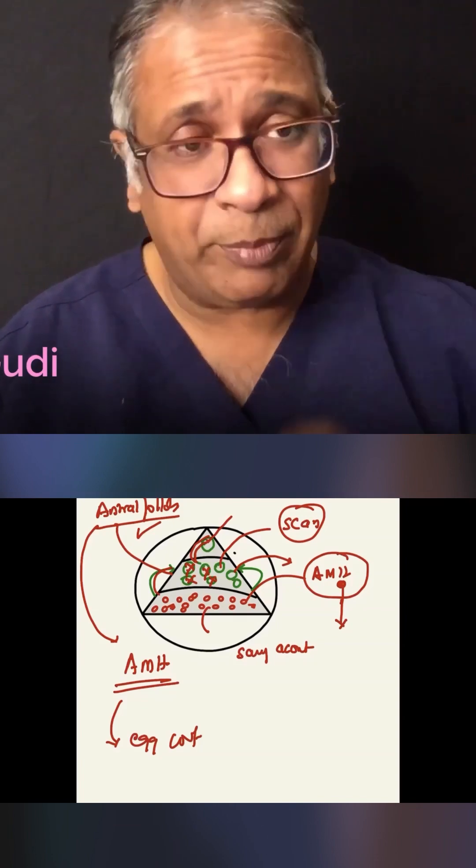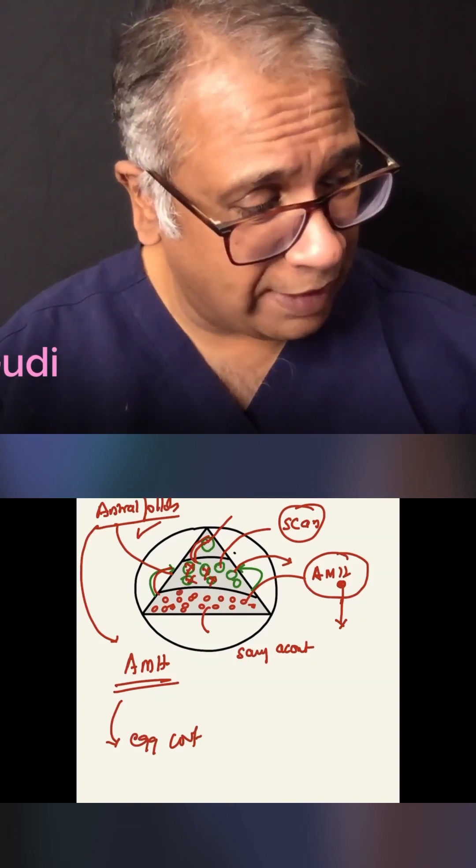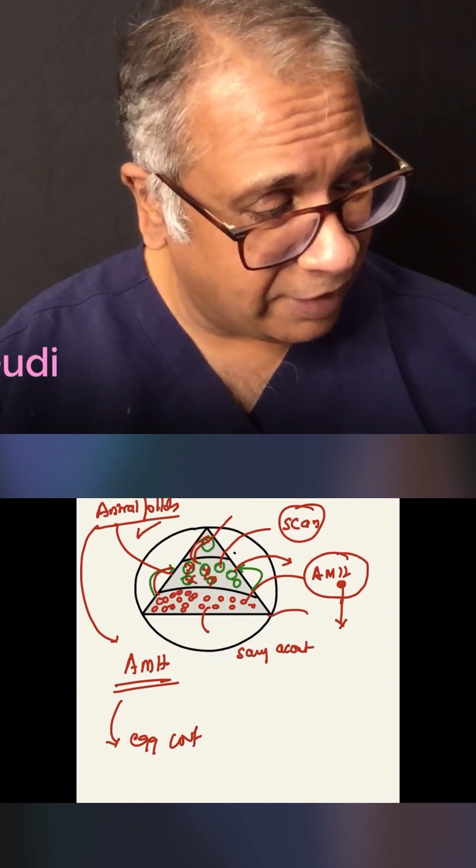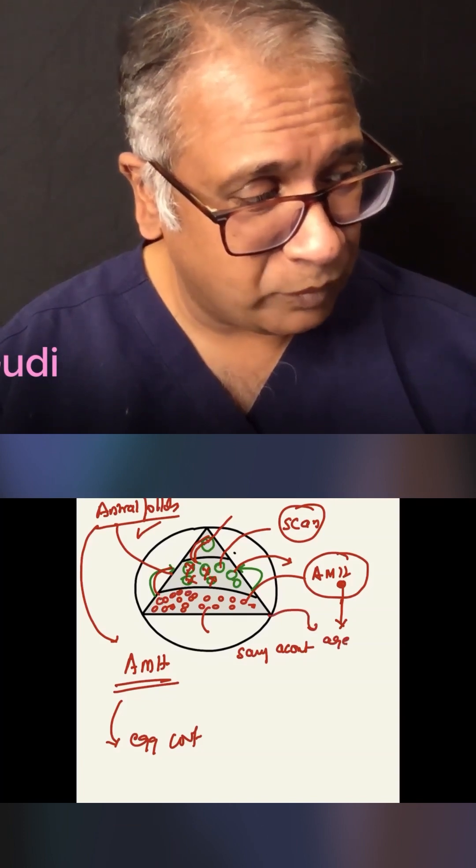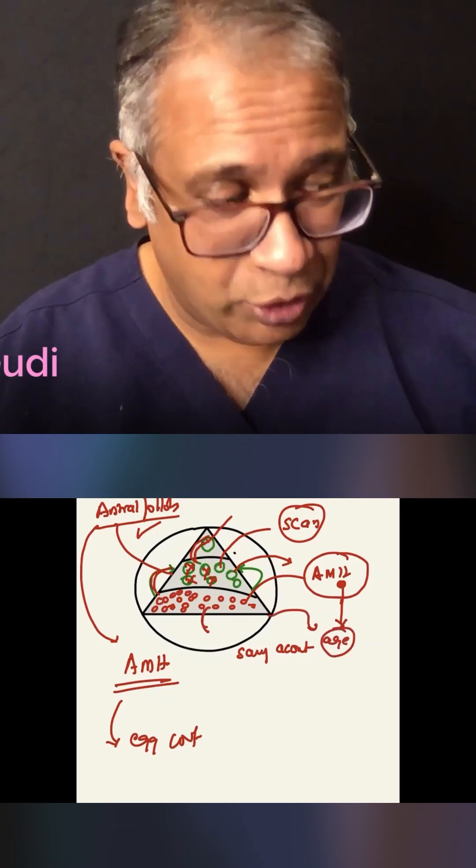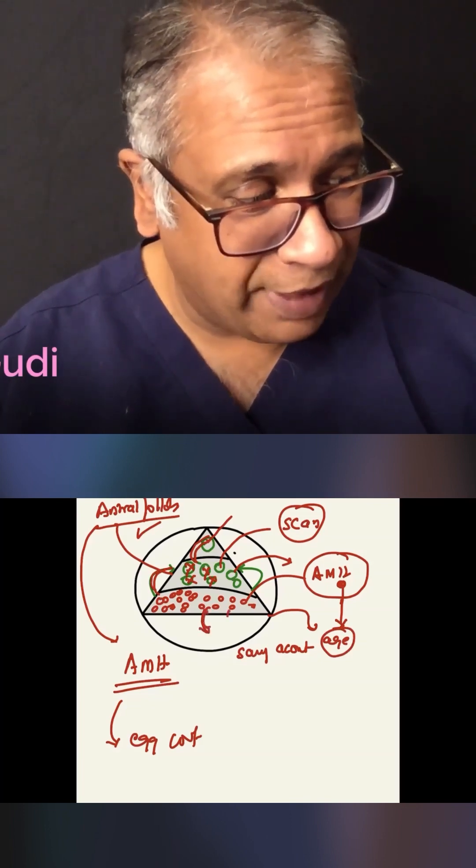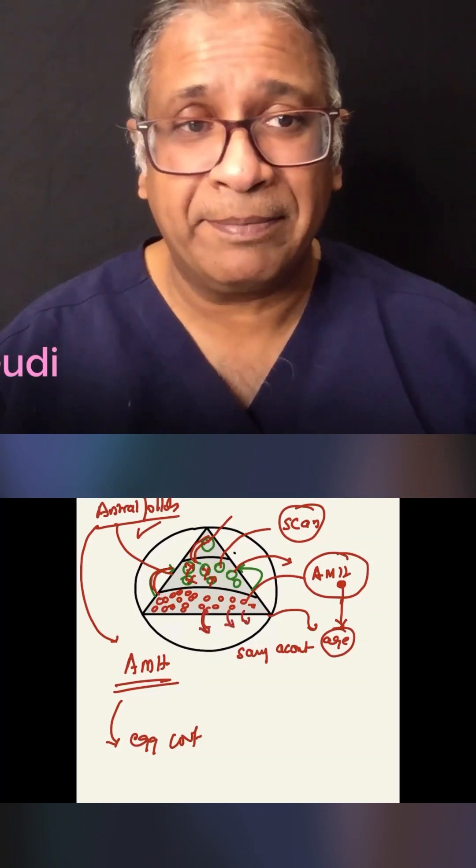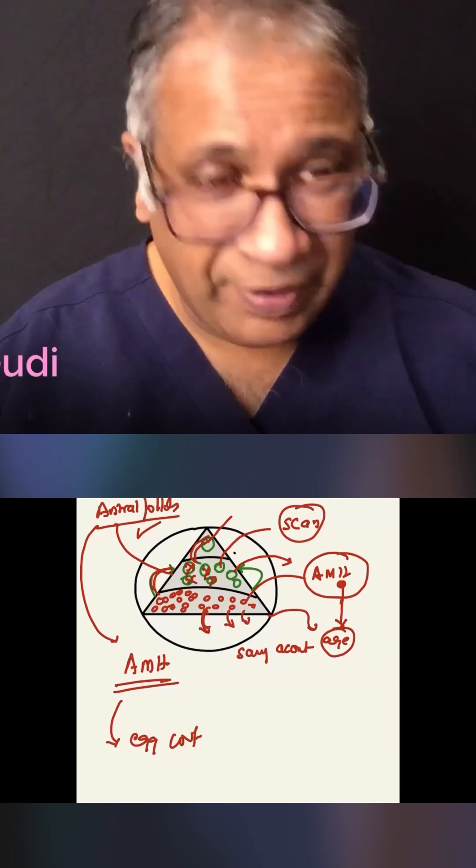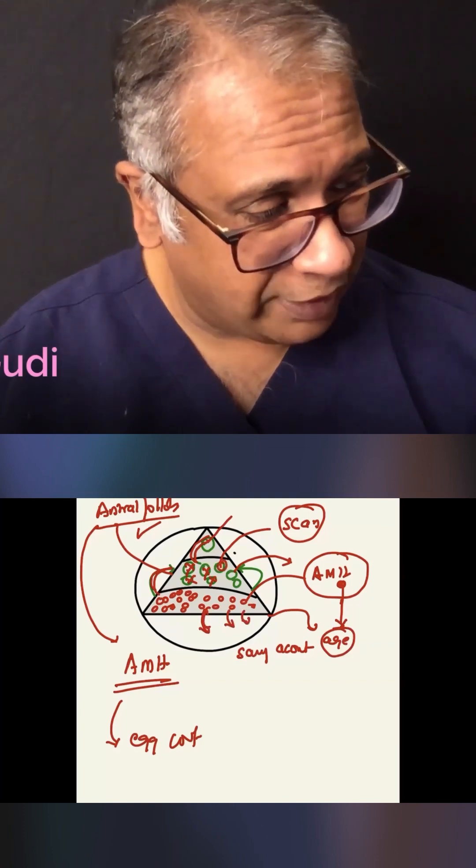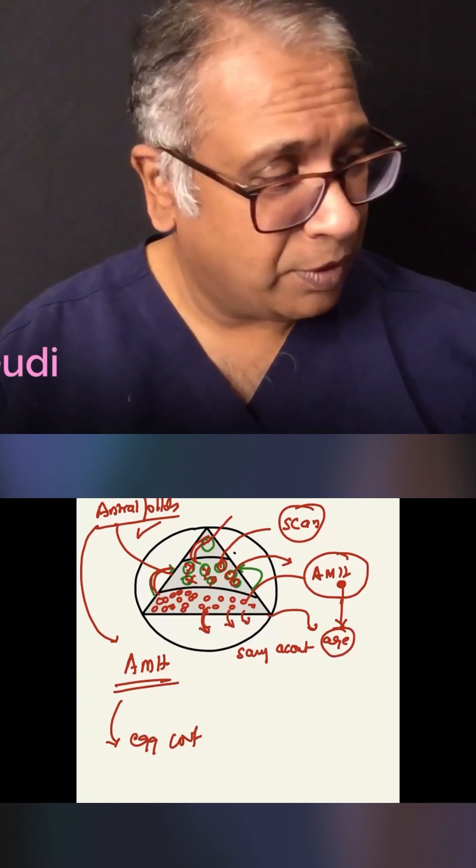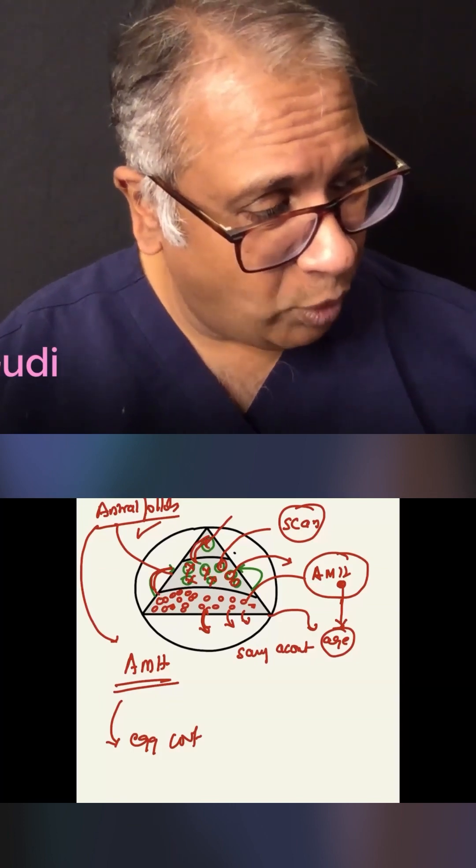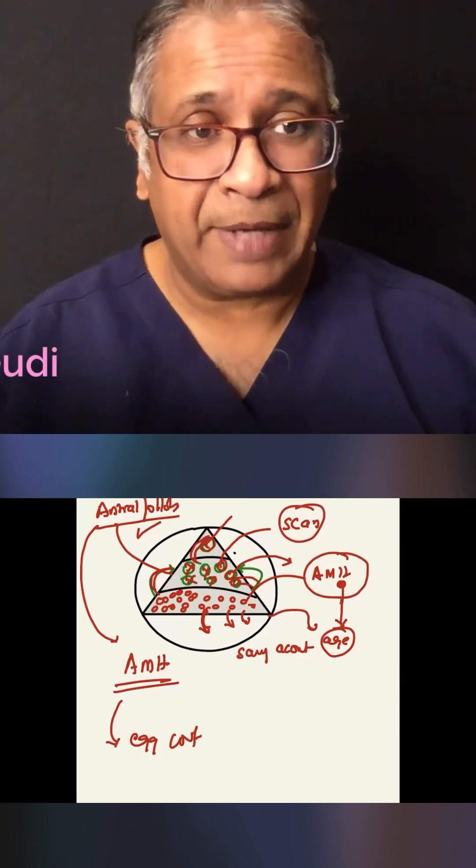Now also important to realize is that these small eggs in the ovary, they decline with age. So even though some are being used, some keep on dying as age goes by. On the other hand, these follicles, also one of them will grow and the others will die. And that is nature.